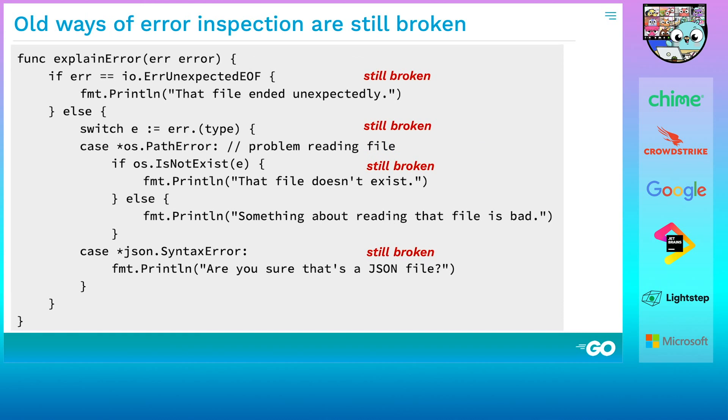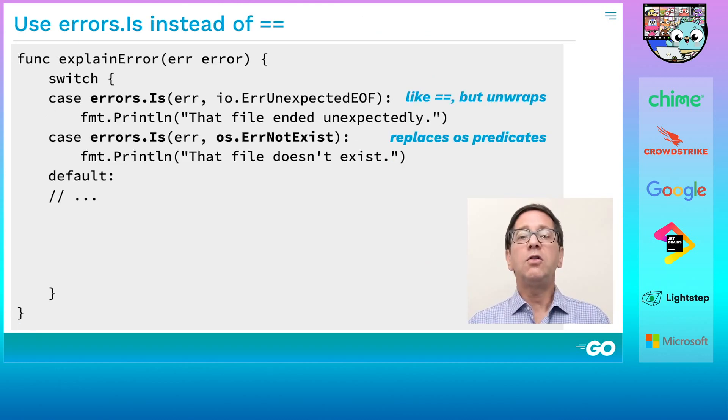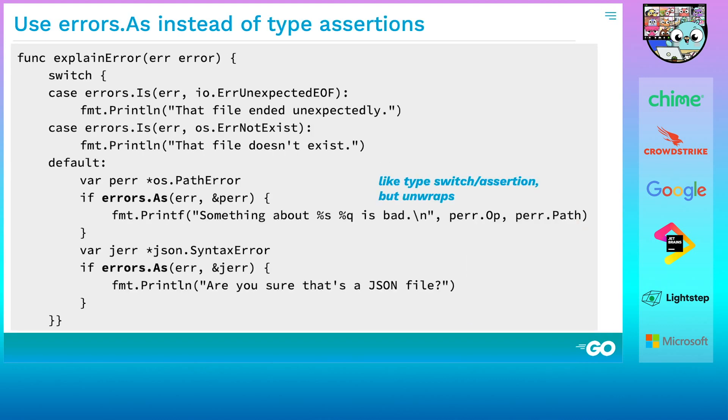Unfortunately, explainError is still broken. It needs to unwrap the error it's given. It can do that with the errors.is and errors.as functions. Errors.is replaces equality checking. It checks for equality, but in a loop that follows the error chain. Errors.is also lets you replace calls to predicate functions with sentinel errors. Errors.as acts like a type assertion or switch, but also in a loop, following the error chain. The pointer you pass to errors.as tells it the type you're looking for and also holds the value of that type if errors.as succeeds. That pointer argument can be confusing at first. We'll talk about it more later.